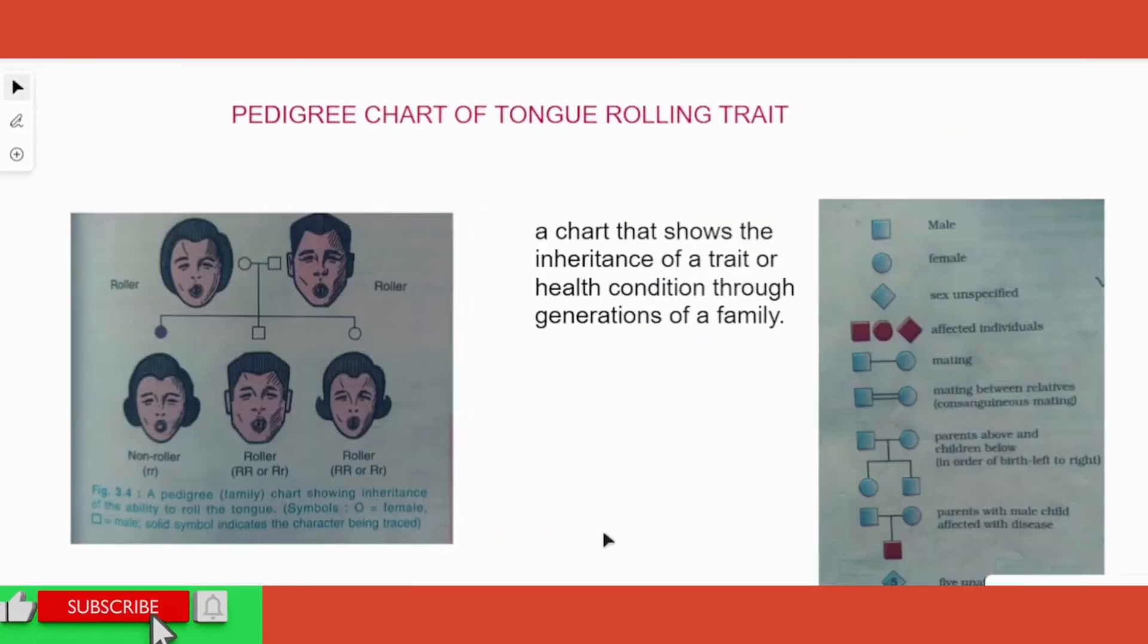Students, welcome back to the series where we will be covering all the important concepts from the genetics topic in ICSE biology. Today we have the topic of pedigree chart of tongue rolling trait.